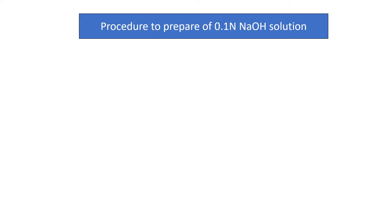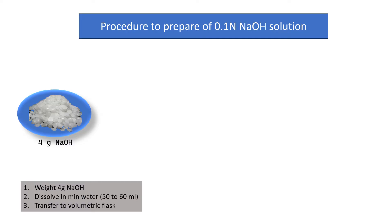Procedure to prepare 0.1 normal NaOH solution. First we weigh 4 grams of NaOH in a glass beaker or watch glass. Don't use butter paper as NaOH is hygroscopic and corrosive in nature.